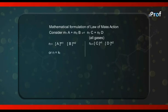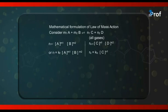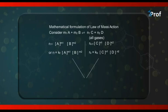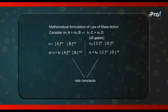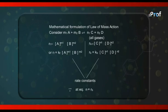Converting proportionality into equations: Rf = kf × [A]^m₁ × [B]^m₂, and Rb = kb × [C]^n₁ × [D]^n₂, where kf and kb are constants — kf is the rate constant for the forward reaction and kb is the rate constant for the backward reaction. Since at equilibrium, the rate of the forward reaction equals the rate of the backward reaction, we can write: kf × [A]^m₁ × [B]^m₂ = kb × [C]^n₁ × [D]^n₂.